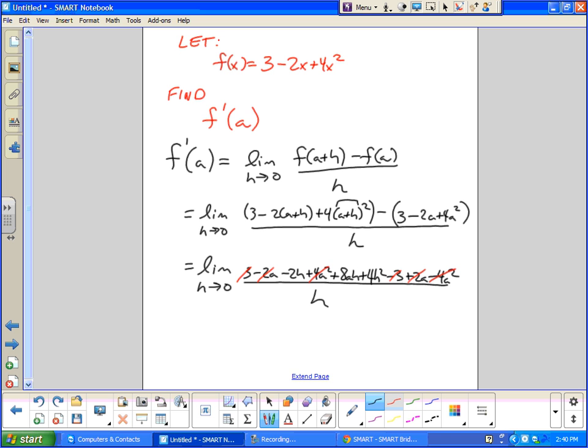So I get the limit as h goes to zero. Negative 2h plus 8ah plus 4h squared all over h. Cancel that h out. Boom, boom, boom, boom. And now the denominator, we can let h go to zero now. The denominator is gone.